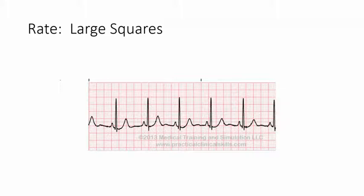Now the next method is called large squares. Alrighty, so you want to count the number of large squares between the two R waves. Okay, and so if you count them there's 1, 2, 3, there are four of them. All right, now remember there are 300 large squares in 60 seconds. There are 30 large squares in a six-second strip and you need to multiply both of those by 10. That's where we get the 300.